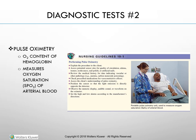Pulse oximetry measures the oxygen content of hemoglobin and oxygen saturation (SpO2) of arterial blood. To perform: explain the procedure; assess sensor sites for circulation quality, swelling, tremor, restlessness, nail polish, or artificial nails; review medical history for vascular pathologies such as anemia or carbon monoxide poisoning; check medications for vasoconstrictive effects. Position the sensor so light emission is directly opposite the detector; observe the numeric display and set alarms per manufacturer's directions.